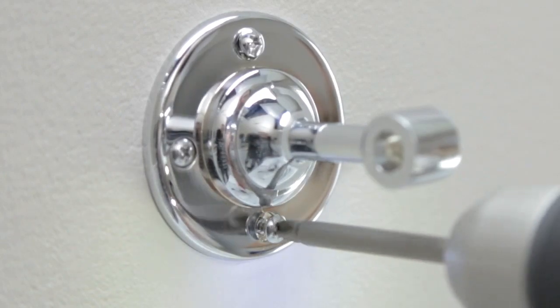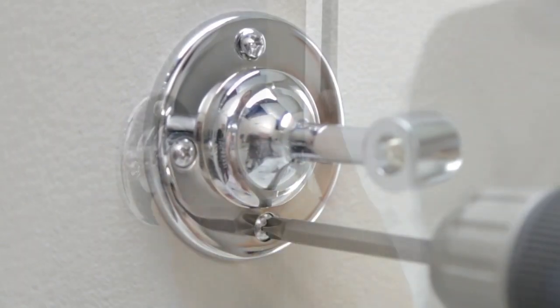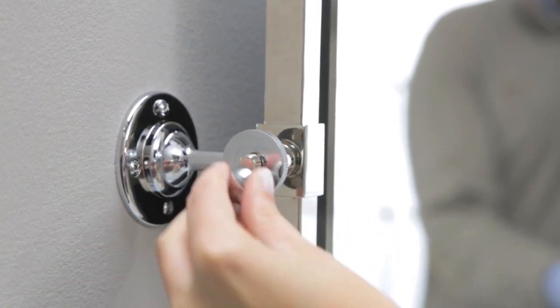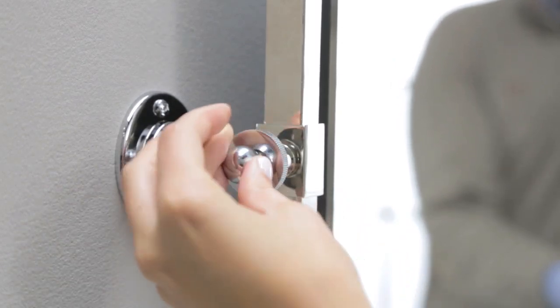Using the provided screws, attach the mounting bracket to the wall. With a helper, insert the mirror into the mounting bracket and secure it with the included hardware.